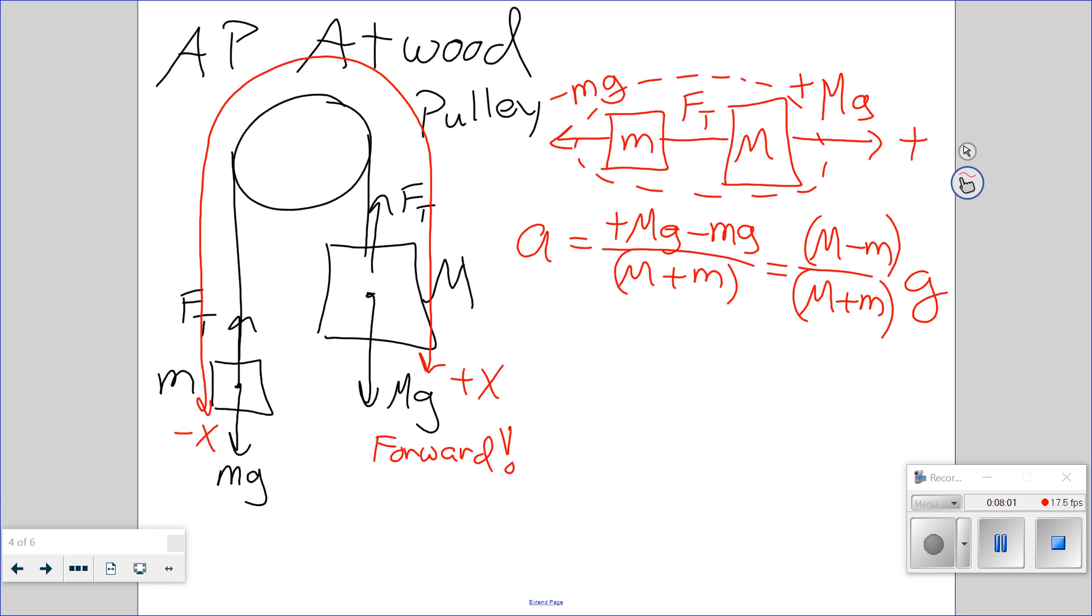For multiple choice questions, difference over the sum times G for an Atwood's machine might be worth memorizing, because that's really easy to remember. Big M minus little M, big M plus little M. Fantastic.